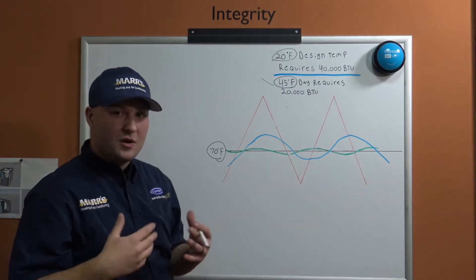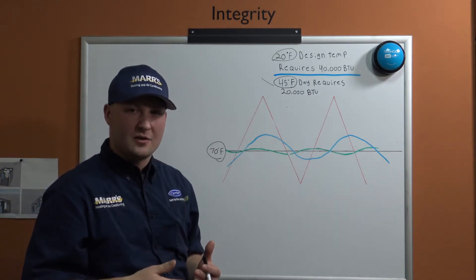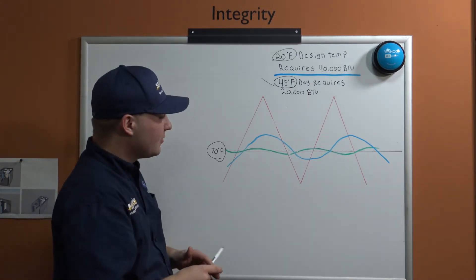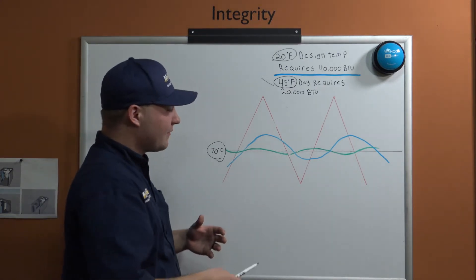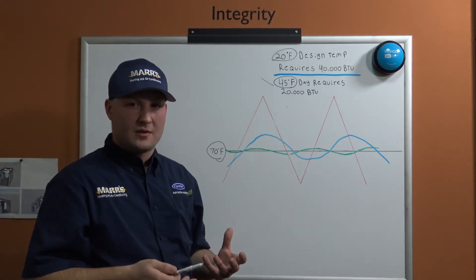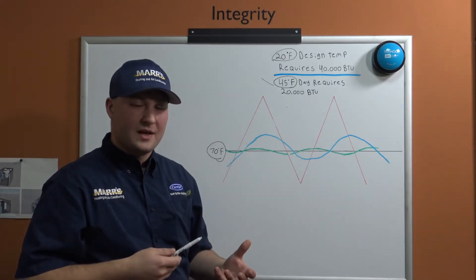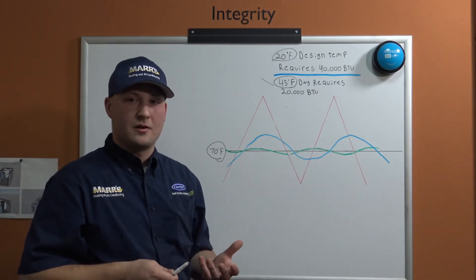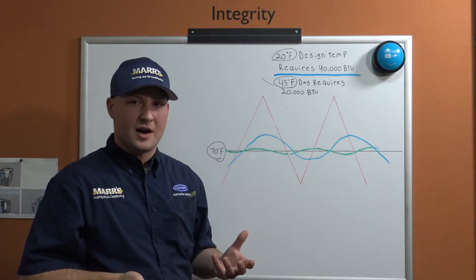The reason we do this is because we don't want that equipment constantly turning on and off—that kills mechanical components. Really what we have, and this is kind of a generality, is big temperature swings inside the house because that system is either 100% on or 100% off. It's like if you didn't have an accelerator for your car, you just had a button that was on and off and you were in stop-and-go traffic.